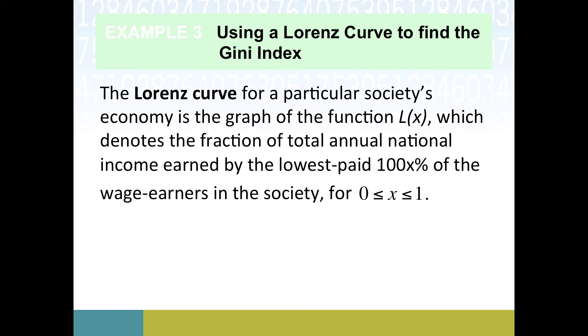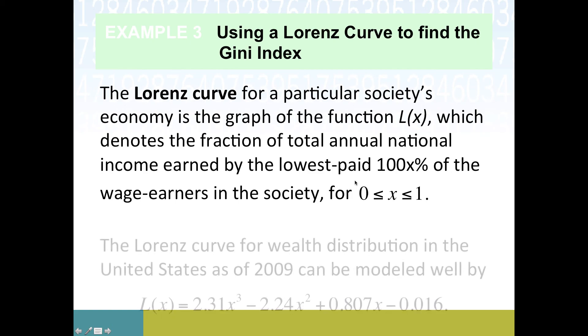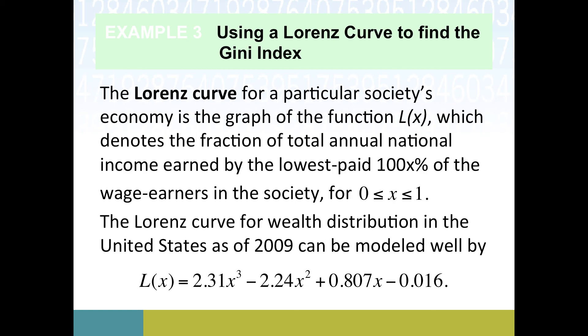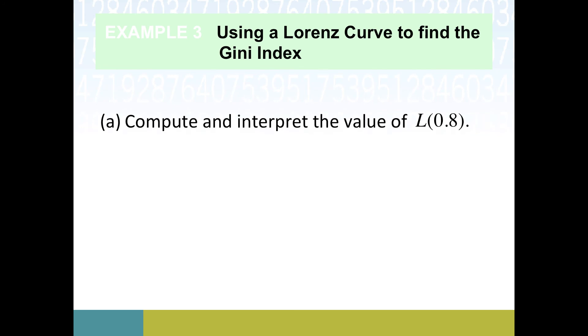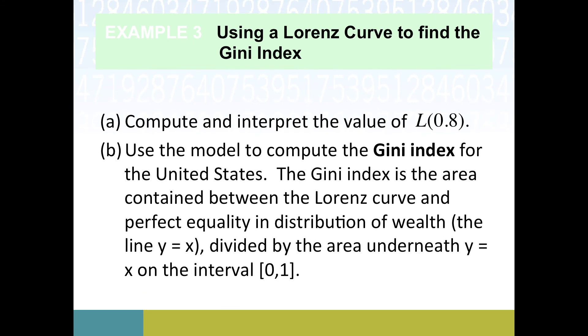We won't have our L of X value ever be bigger than X, because then they wouldn't be the lowest paid ones. If we look at the United States, we could take data through 2009, and we can get ourselves a decent Lorenz curve in this polynomial. If you're keeping careful track of things, you might notice that this minus 0.016 puts us a little bit off, but it ends up giving us a pretty good model. So our tasks here are to compute and interpret L of 0.8, and then we're going to figure the Gini index out using this particular model.